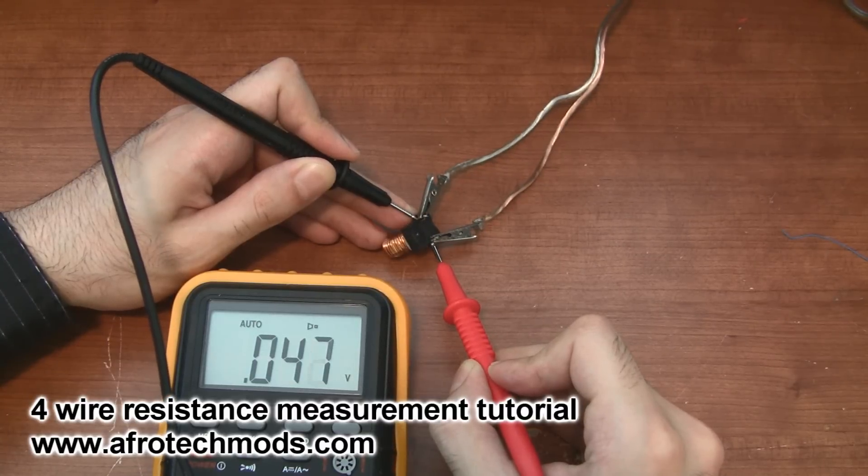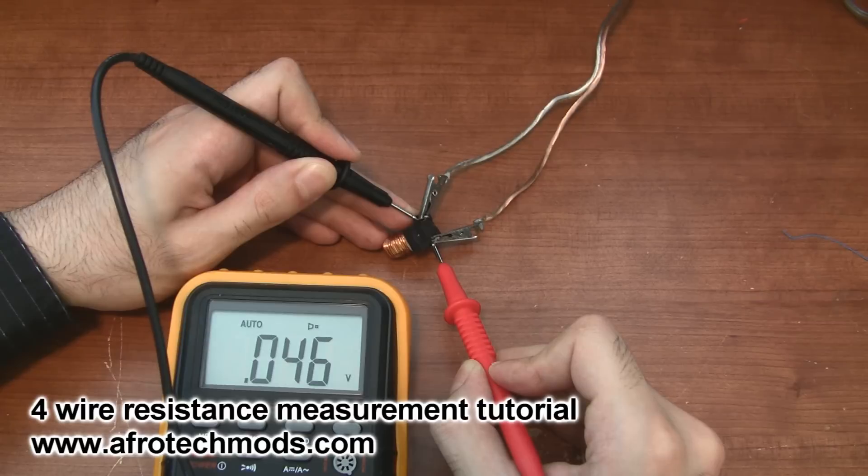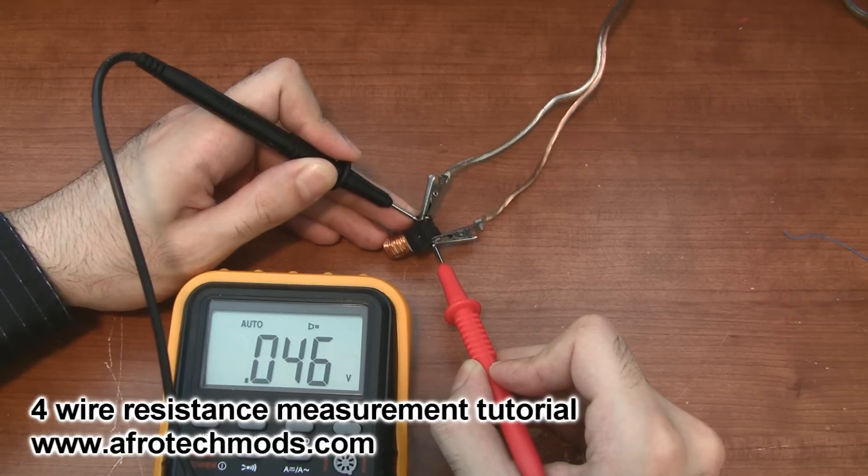In this video I'm going to show you how you can use a cheap multimeter to measure resistances in the milli-ohm range with a decent amount of accuracy.